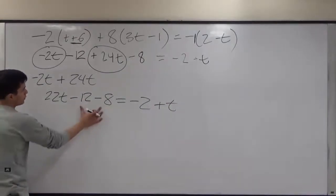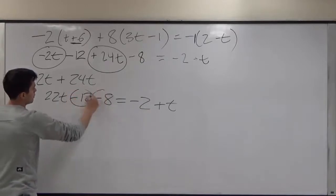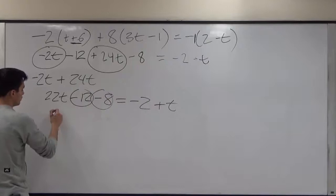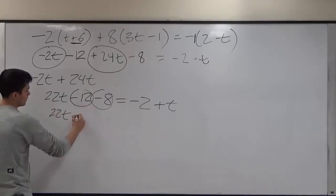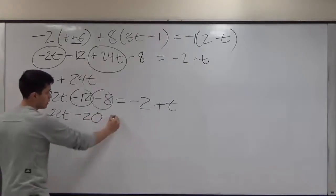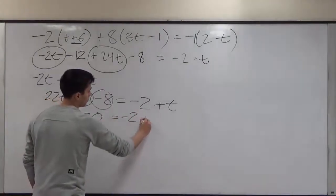From here now, we want to get t by itself, but we can still combine these two. So we have negative 2 plus t.